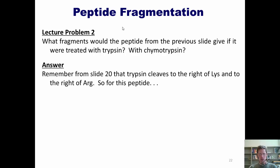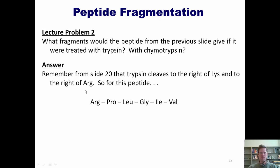So here's our answer. Remember that trypsin cleaves to the right of lysine and to the right of arginine. Here's our peptide from the previous example. What trypsin will do is come down here and find anywhere there's an arginine and break the bond to the right, and anywhere there's a lysine and break the bond to the right. As we scroll down, we can see there are no lysines. There is an arginine, however, so trypsin will clip this bond.